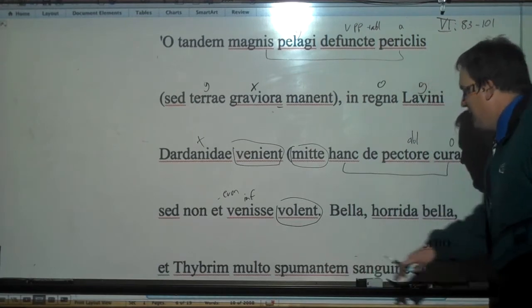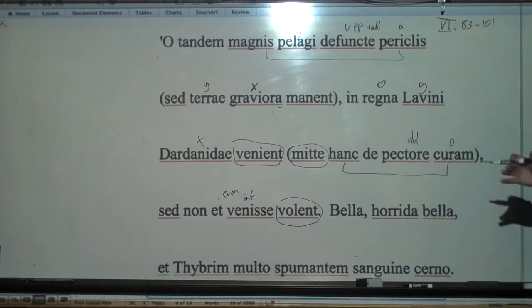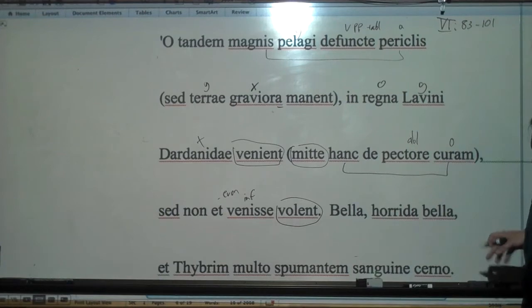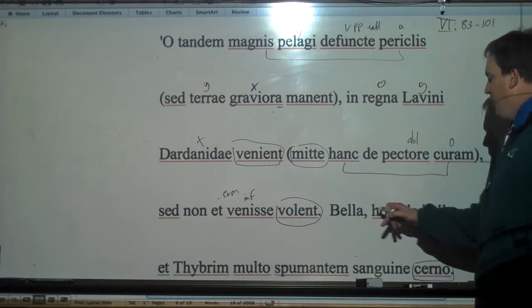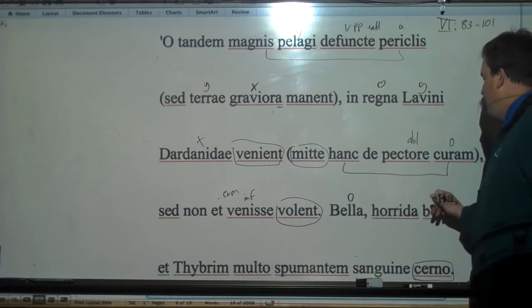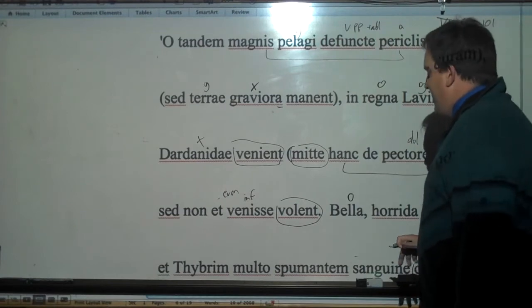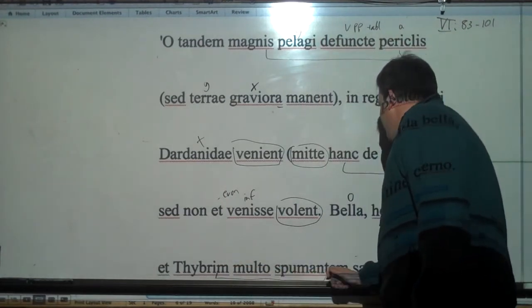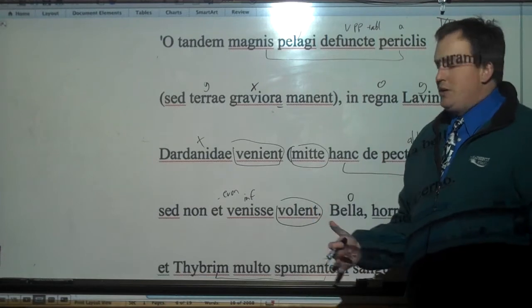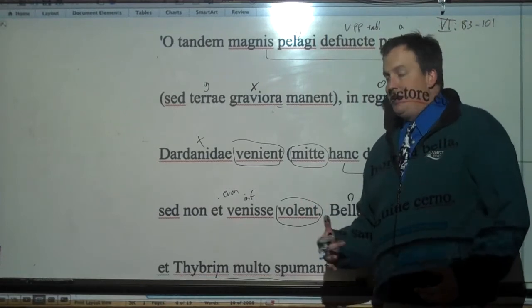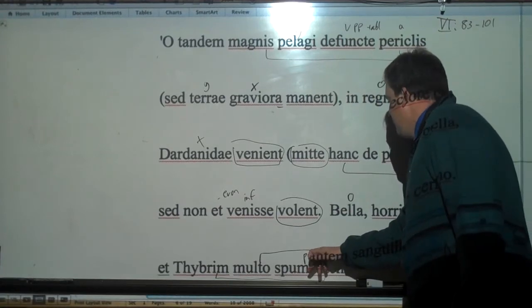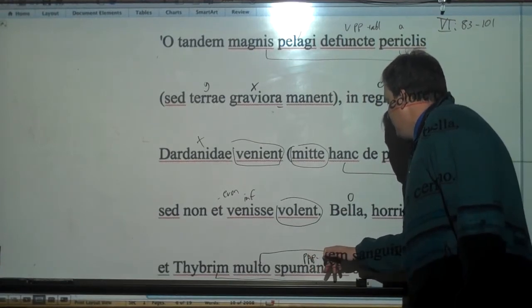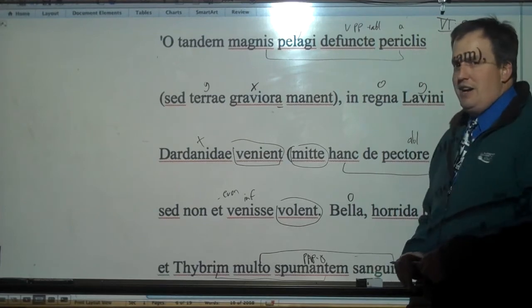And then we have this really famous thing that if you play Rome Total War you'll notice as well. Bella horrida bella et Thybrim multo spumantem sanguine cerno. I see, she says, war, horrible war, and the river Tiber spumati, from spuma - spuma means foam, so this is the verb form of foaming, frothing with much blood, PAP. Very dramatic.